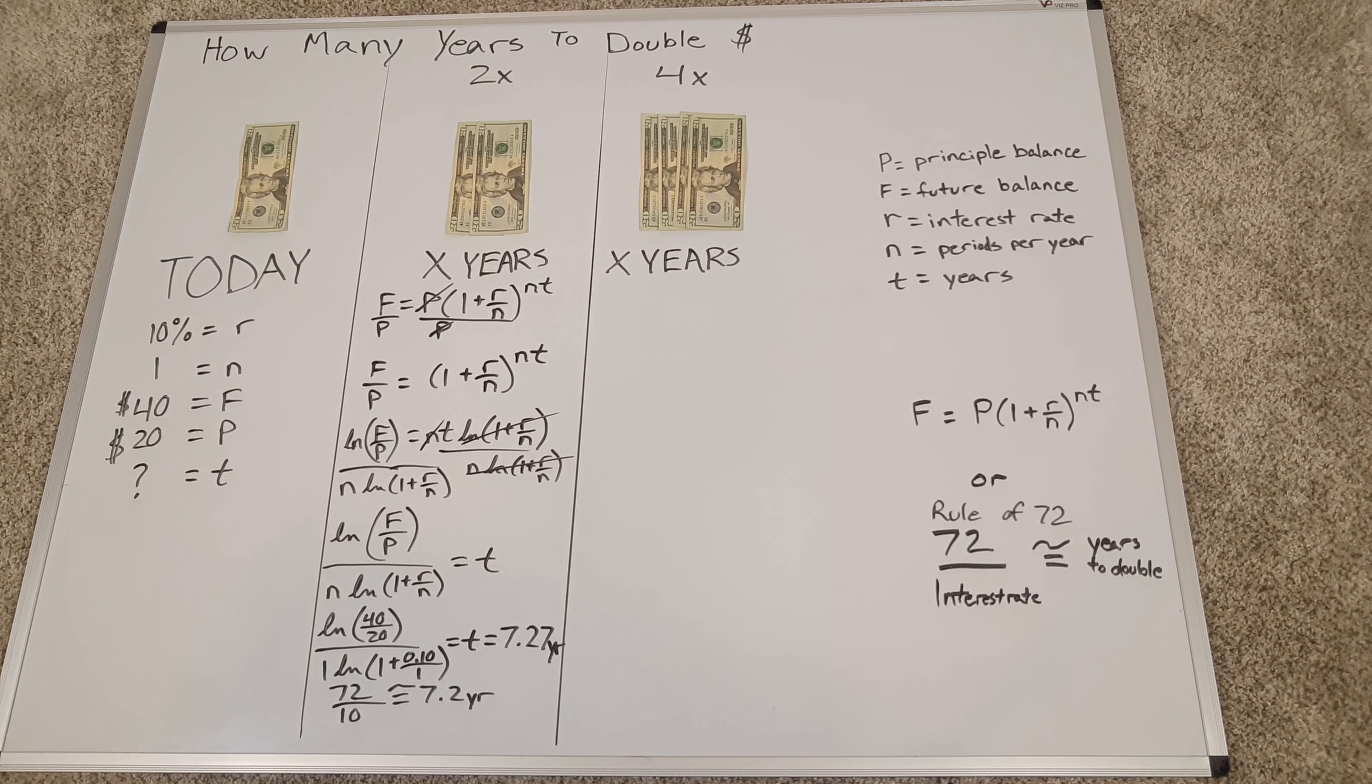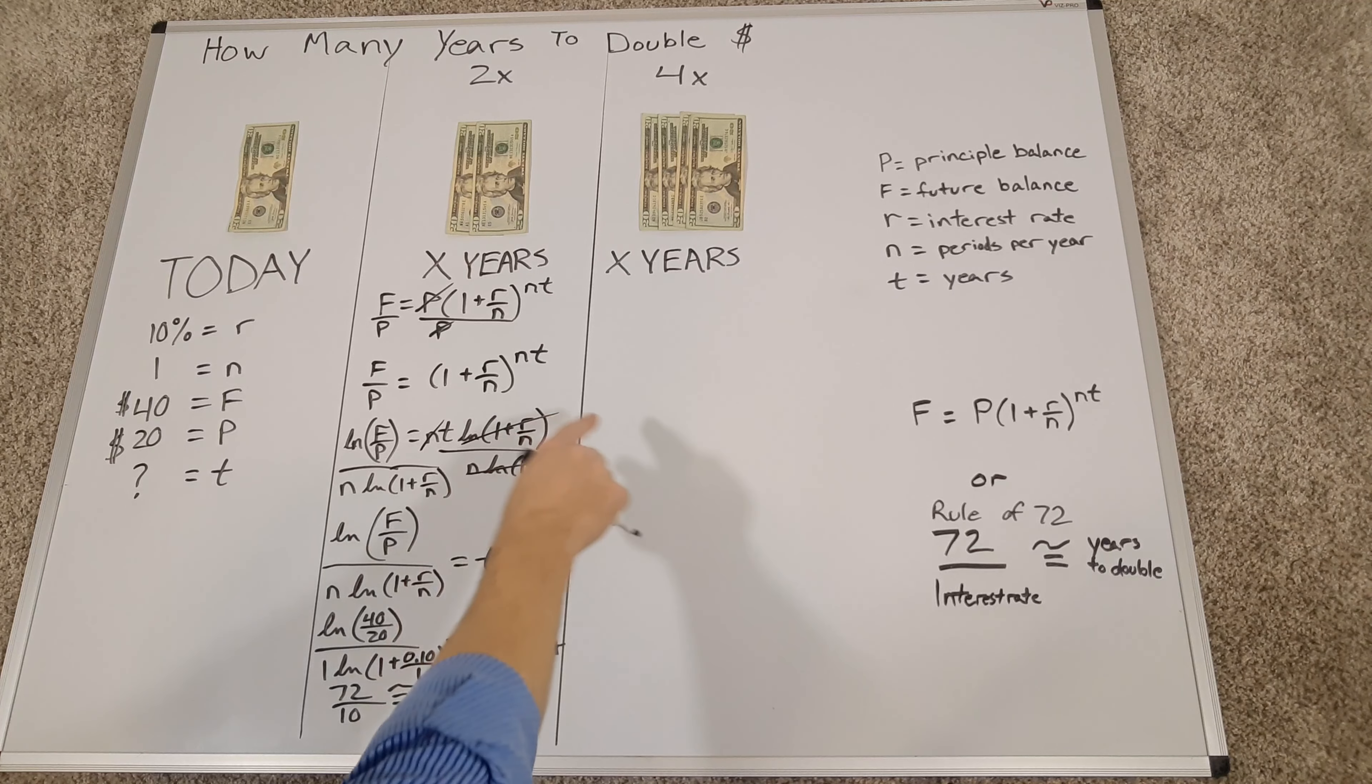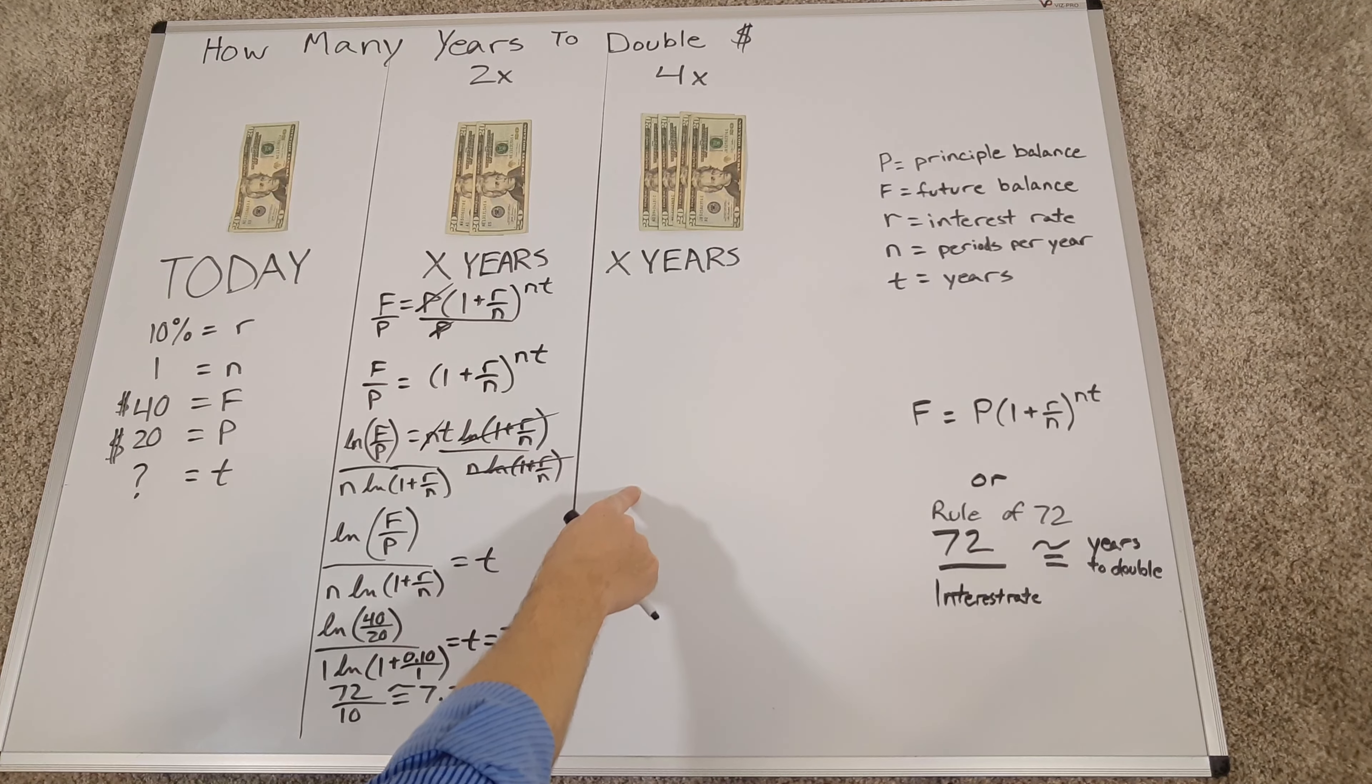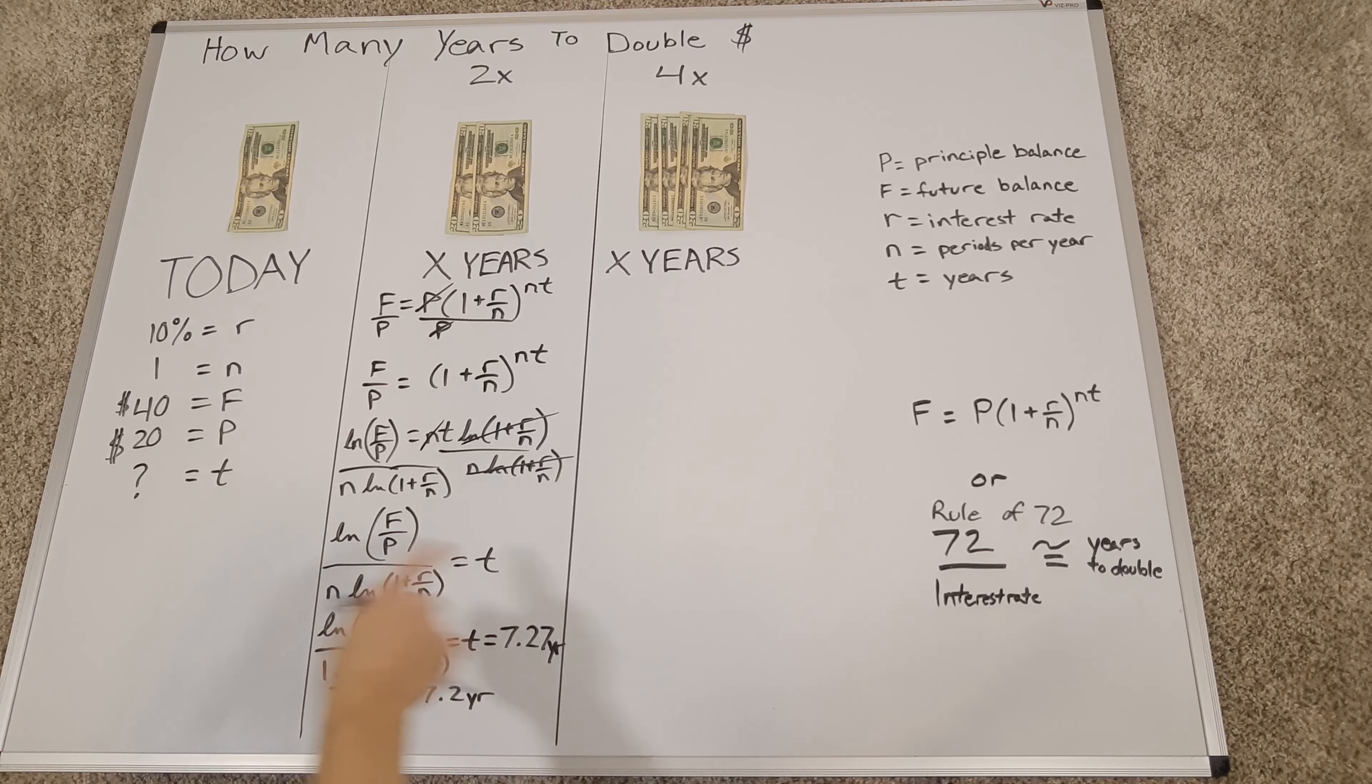So the rule of 72 is very handy. Now, again, let's go through how long will it take to double my money again. Well, I can either go through this math and plug in 80, or I could say, well, 72 divided by 10 is 7.2 years, so this is going to take me approximately 14 and a half years.